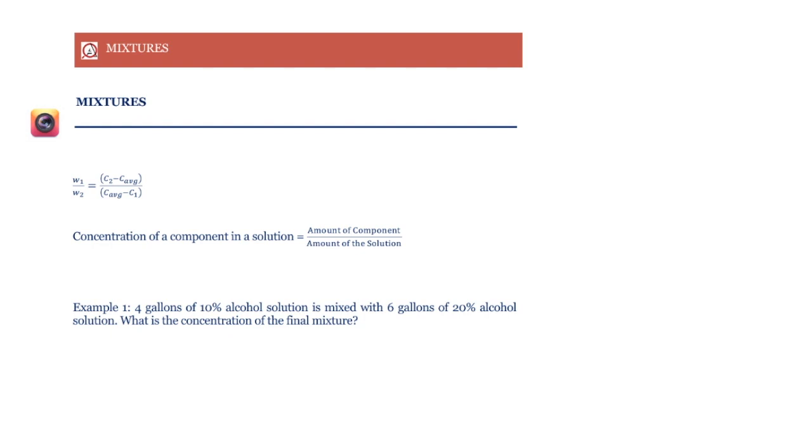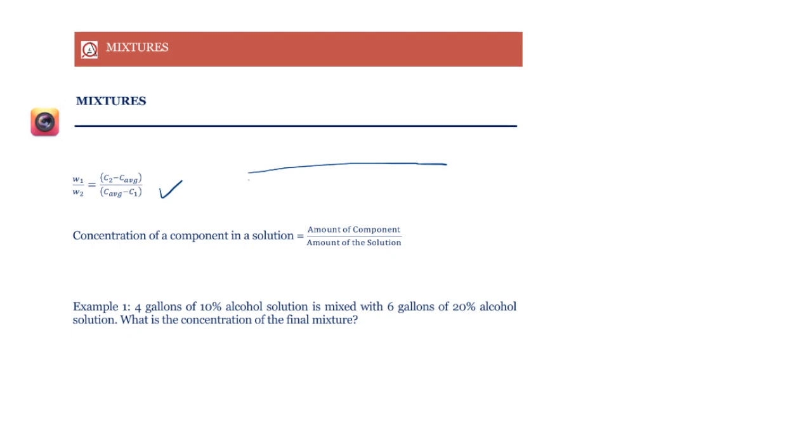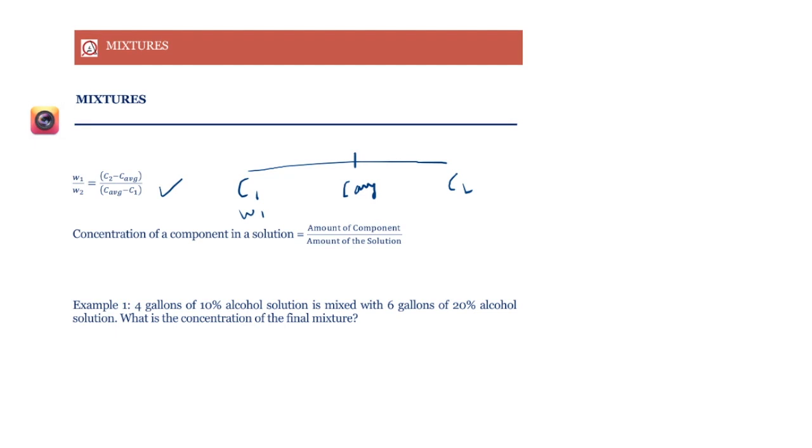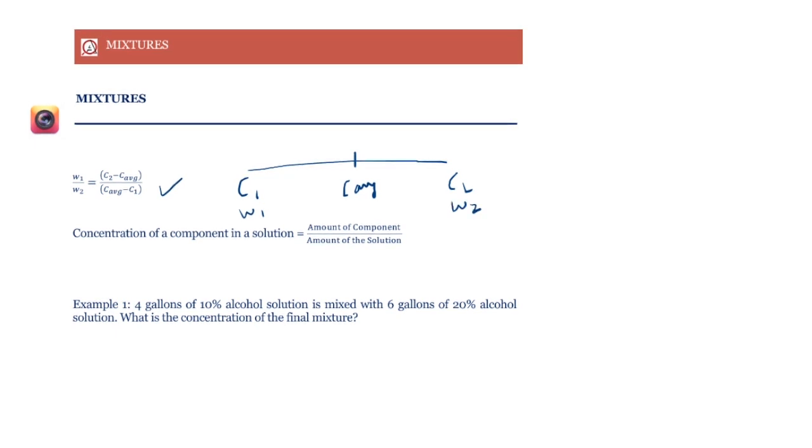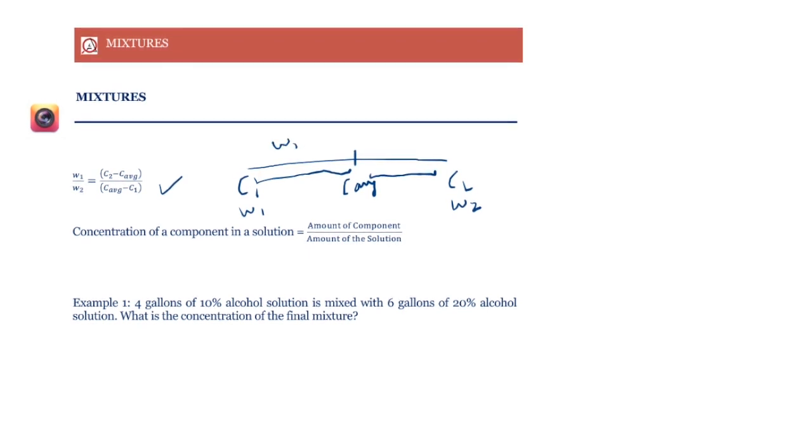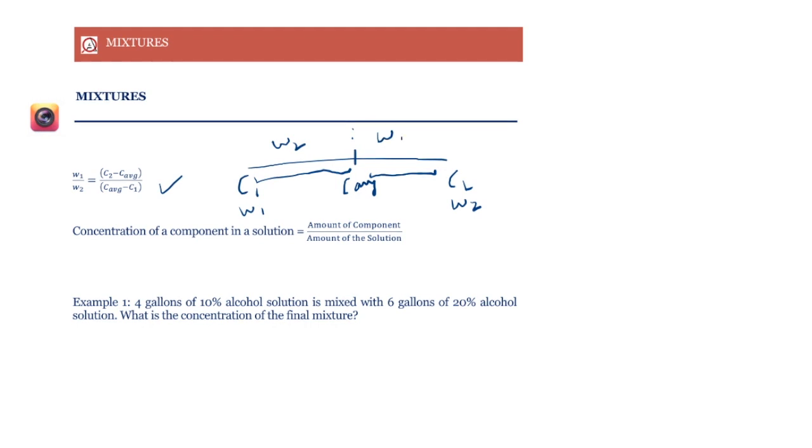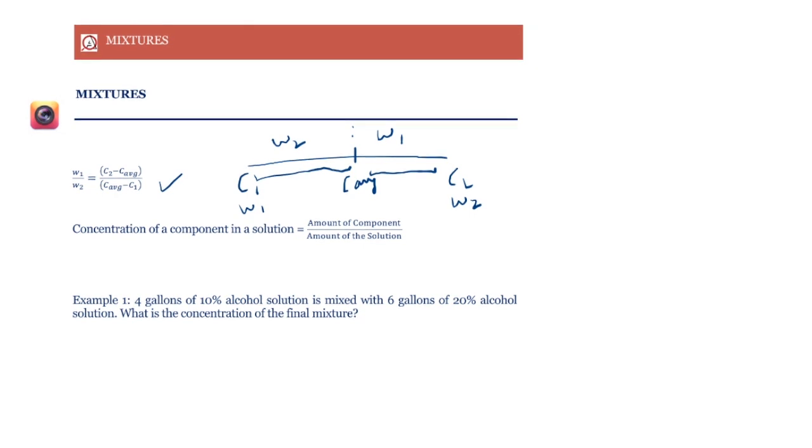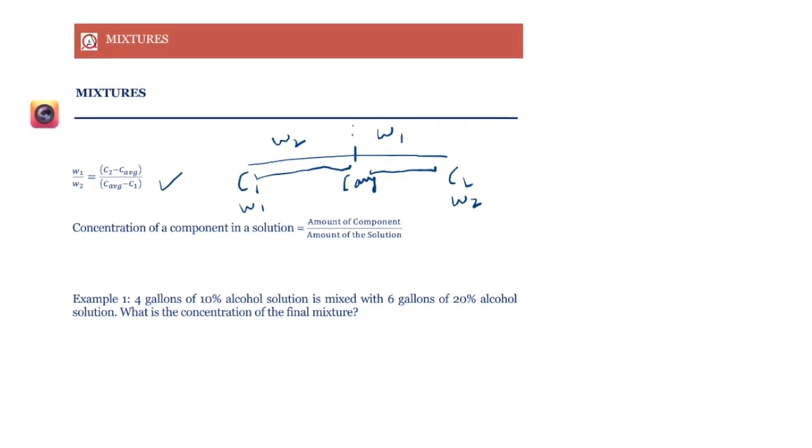Mixture is a direct application of weighted averages. So we will often use this formula that we've discussed in weighted averages or we could also use the scale in mixture questions. So if you recall this is C1, C2 and then somewhere we'll have the C average and if the weight given to C1 is W1 and the weight given to C2 is W2 then this length will be divided in the ratio W2 is to W1. That is the inverse of the ratio of the weights. So we'll use either this formula or the scale in the mixture questions.